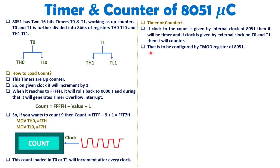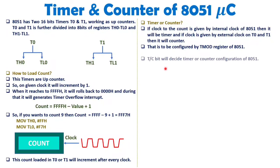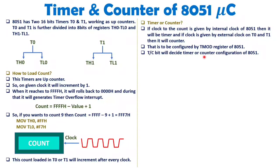To configure this timer or counter, we need to configure the TMOD (Timer Mode) register, which I will explain in the next video. By configuring the TMOD register we can decide whether we want the timer to work as a timer or a counter. The TC bit of the TMOD register decides whether we are configuring it as a timer or counter.